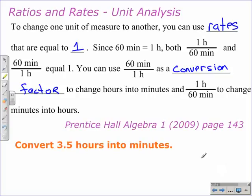Unit Analysis. To change one unit of measure to another, you can use rates that are equal to 1. Since 60 minutes equals 1 hour, both 1 hour over 60 minutes and 60 minutes over 1 hour equal 1. You can use 60 minutes over 1 hour as a conversion factor to change hours into minutes, and 1 hour over 60 minutes to change minutes into hours.